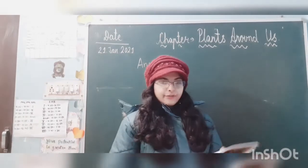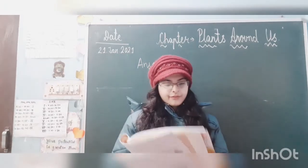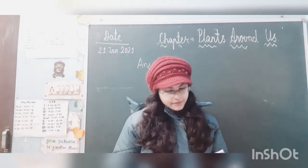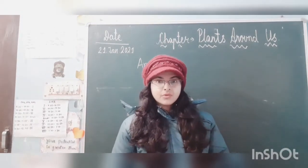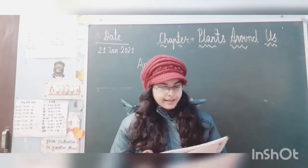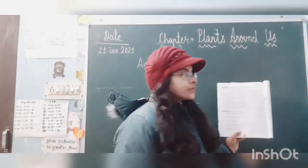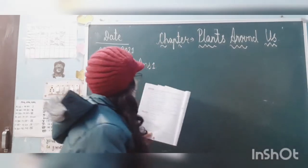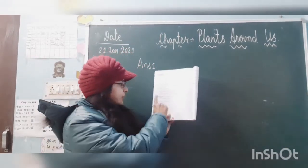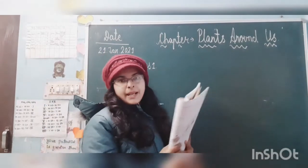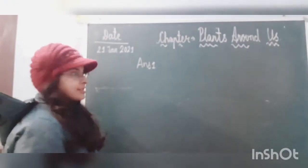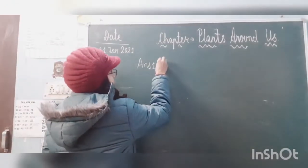Activity 5. In activity 5 you have to answer the questions. Answer these questions. The first question is: name the types of plants. What are the types of plants? Write down.